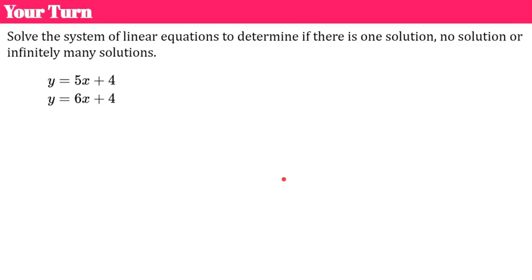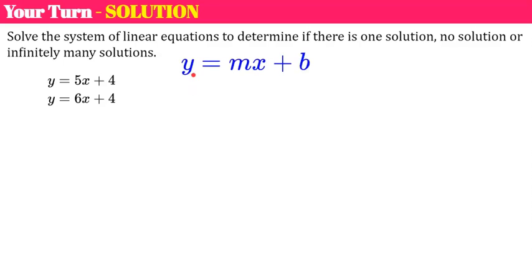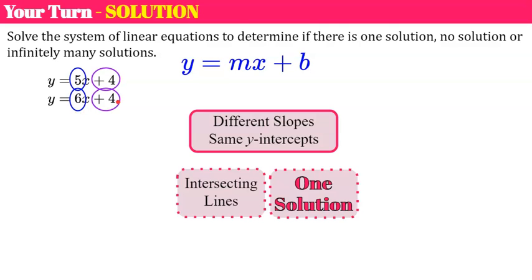One more for you. Please pause, determine the type of solution, and come back when you're done. Welcome back. Looking at slope-intercept form, my slopes are different — automatically telling me I have one solution. Even though the y-intercepts are the same, we still have intersecting lines because the slopes are different. We will have one solution.